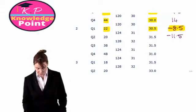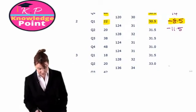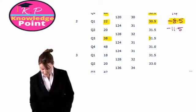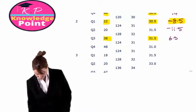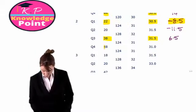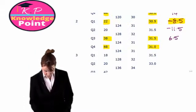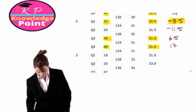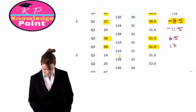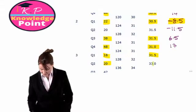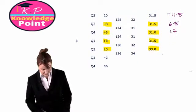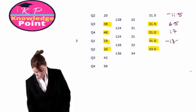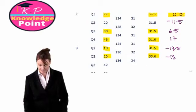For quarter three of year two, we have 38 minus 31.5, giving us 6.5. For quarter four of year two, 48 minus 31 is 17. Finally, for quarters one and two of year three, our seasonal variations are minus 13.5 and minus 13.5.